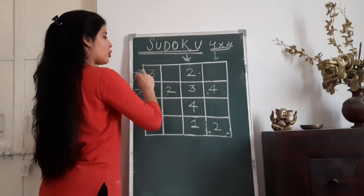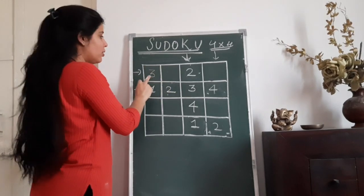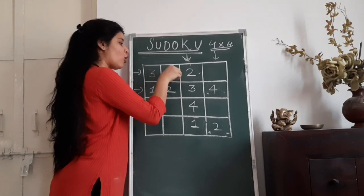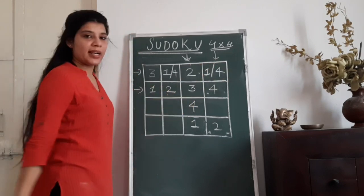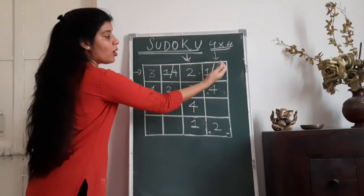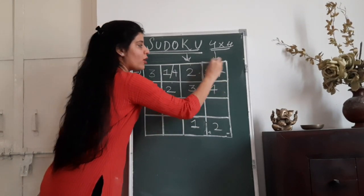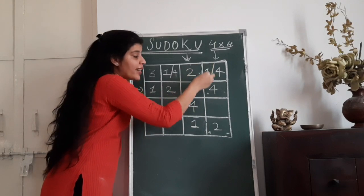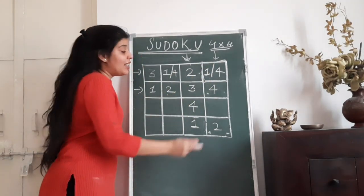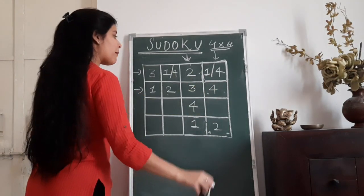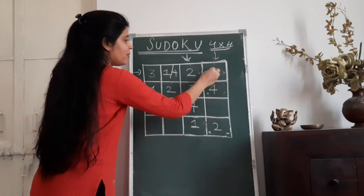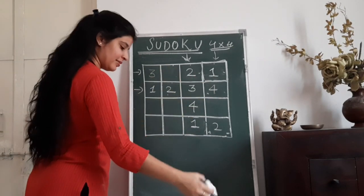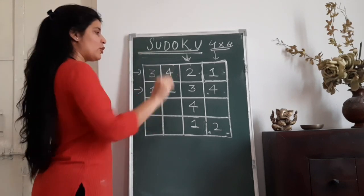Now as 4 is coming in that cell, 4 cannot come in the adjacent cell, so the number which is going to come there is going to be 2. Now let's try to solve the first row. 3 and 2 are already used, so either 1 can come here or 4 can come here. But can 4 come in this block? No, 4 cannot come here because 4 is already in the fourth column, and if I put 4 here, then 4 is going to repeat itself in that column. So the number which will come here is going to be 1, and therefore 4 is going to come in the other cell.